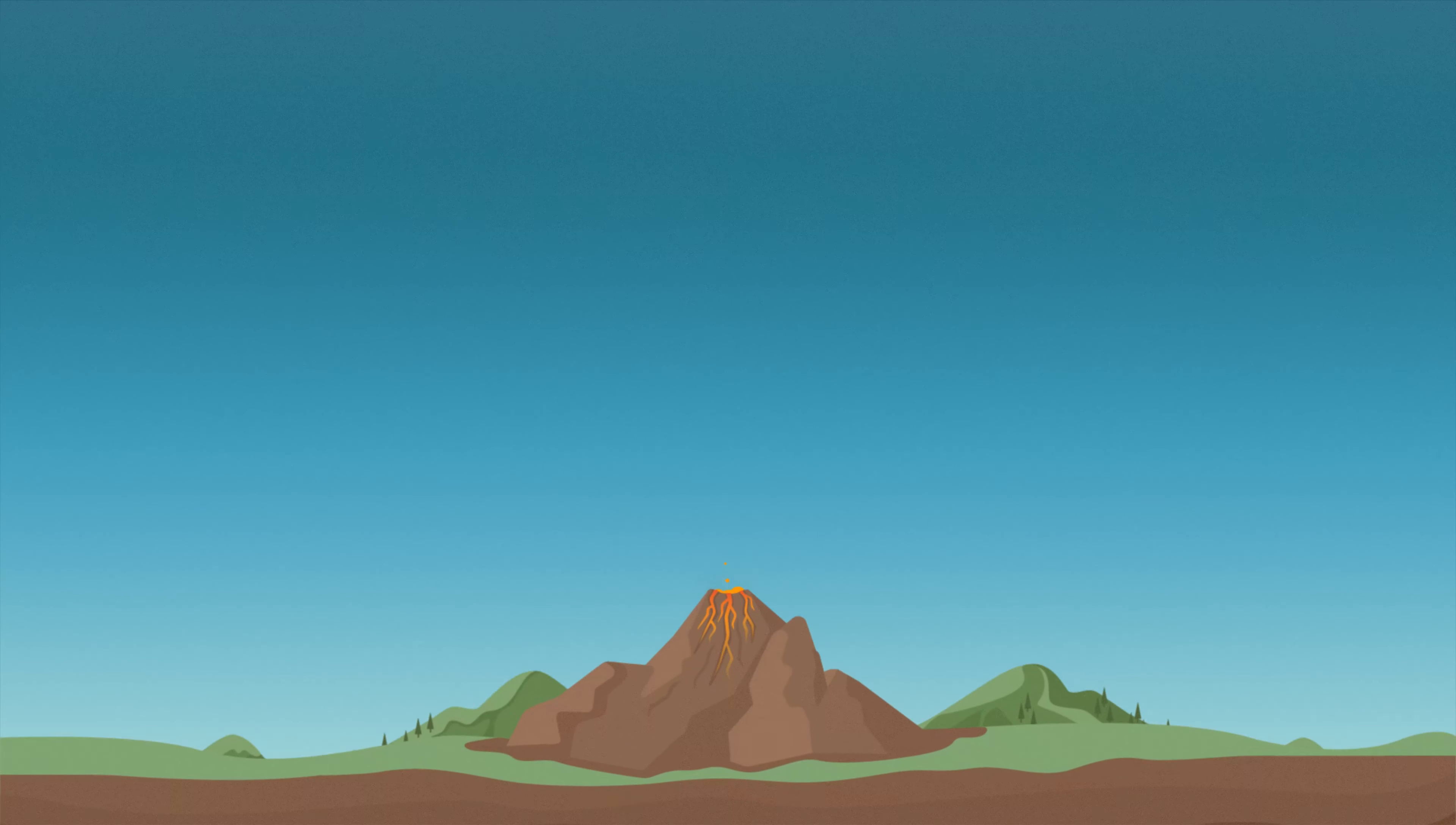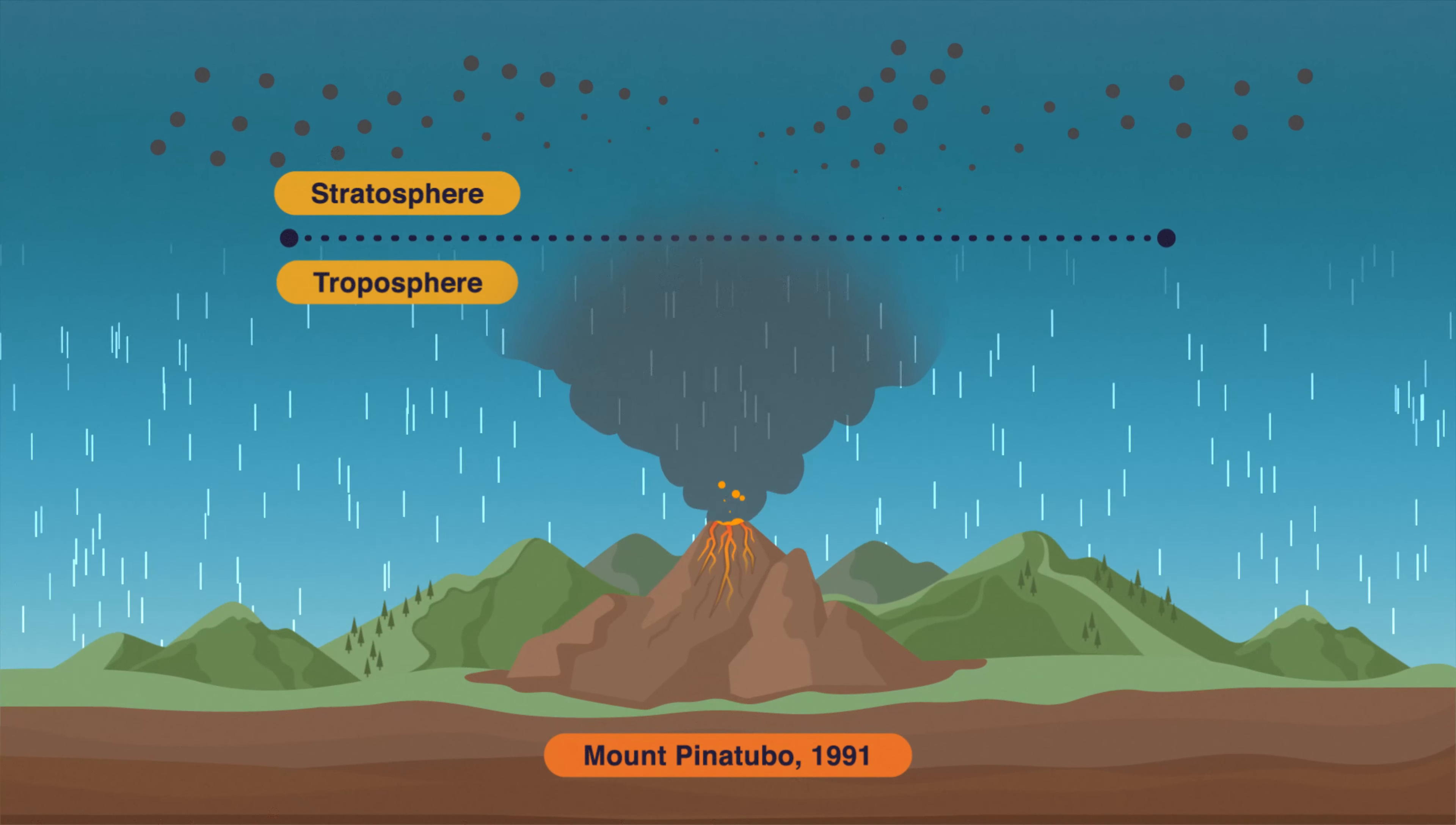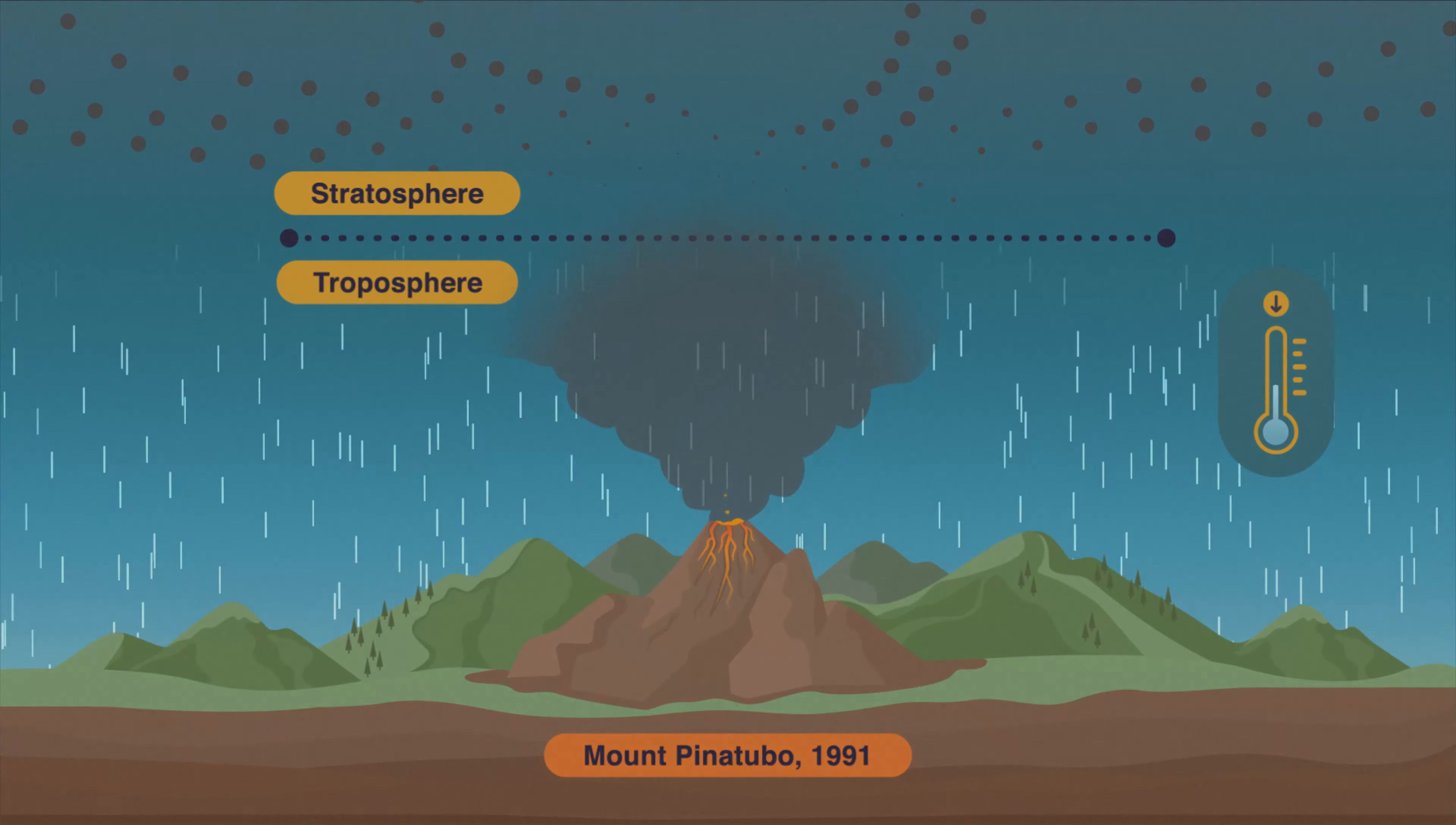This is what happened after the Mount Pinatubo volcano eruption in 1991. It ejected 20 million tons of sulfur dioxide into the atmosphere, high above the clouds, where the particles didn't get washed away by rain. And as a result, the global temperatures dropped by half a degree for two years.